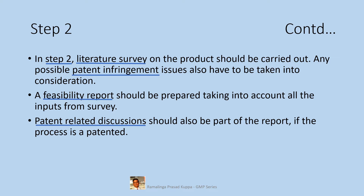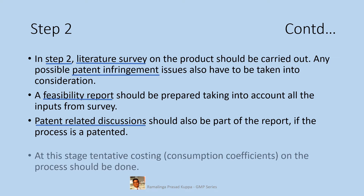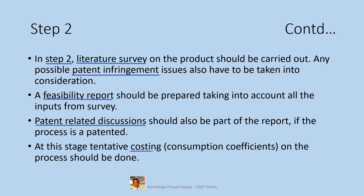Information on patent infringement also should be part of this feasibility report. At this stage, tentative costing — that is, the consumption quotients in the process — should be done. The consumption quotients are necessary to evaluate the product cost. This is abbreviated as CC, which is calculated as the amount of material required per kilogram of the final product. Some correction factor for recoveries also should be considered separately.